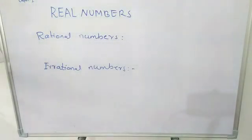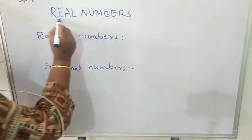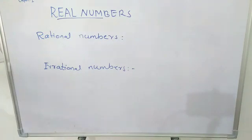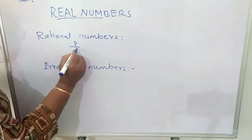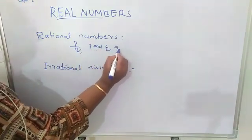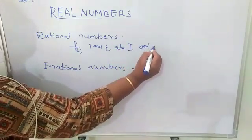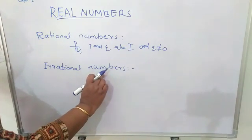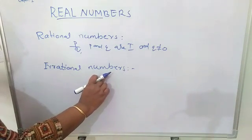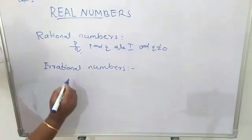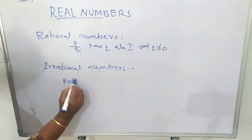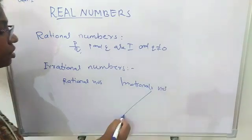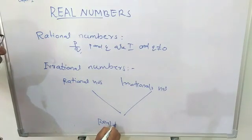Dear students, let us start with the first chapter of Class 10 Mathematics: Real Numbers. In Class 9, you have studied about rational numbers and irrational numbers. The numbers which can be written in the form of P upon Q, where P and Q are integers and Q not equal to 0, are called rational numbers. The numbers which cannot be written in this form are called irrational numbers. The collection of all rational numbers and irrational numbers together make up the collection of real numbers.